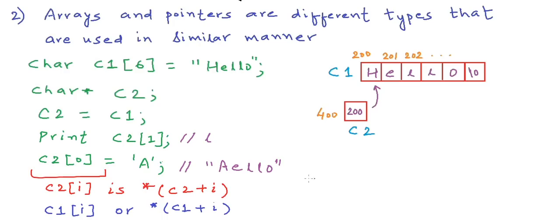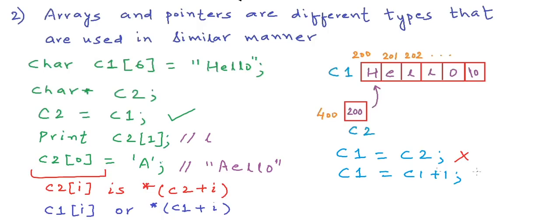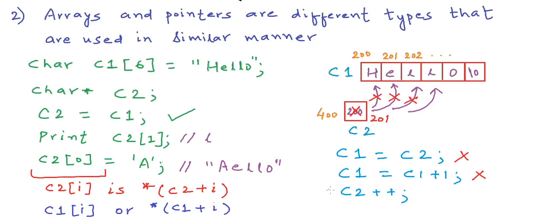Now let us look at the differences. We cannot modify an array variable with an assignment: c2 = c1 is valid but c1 = c2 is not — it gives a compilation error. We cannot increment or decrement the array variable c1. We can do it for the pointer variable c2 — writing c2++ makes c2 point to the next element, changing it from address 200 to 201. To traverse an array, we use a loop with an index variable. With a pointer, we can simply keep incrementing it to traverse the array.